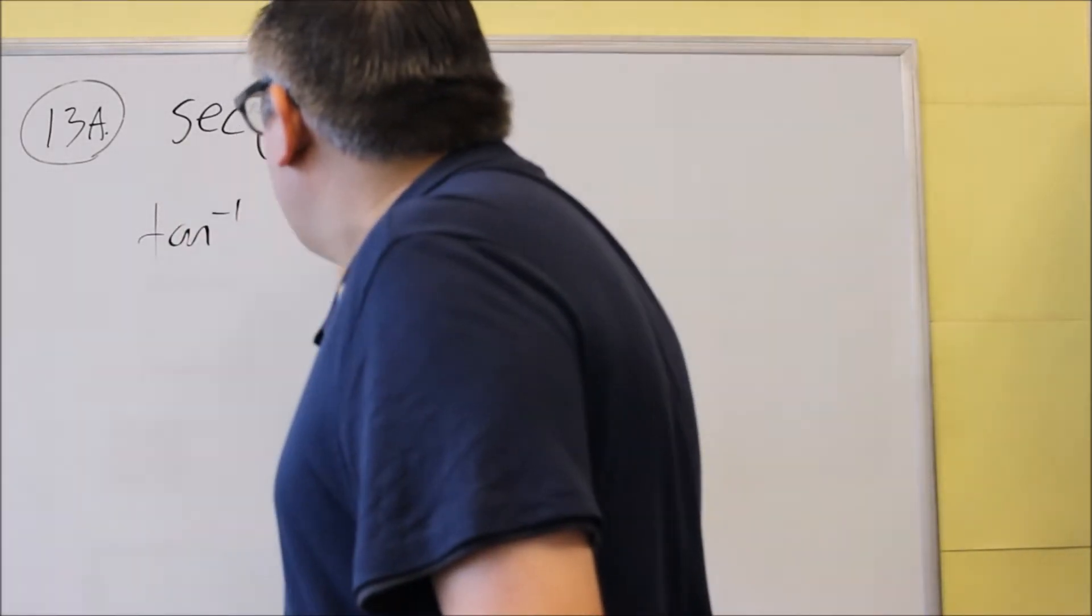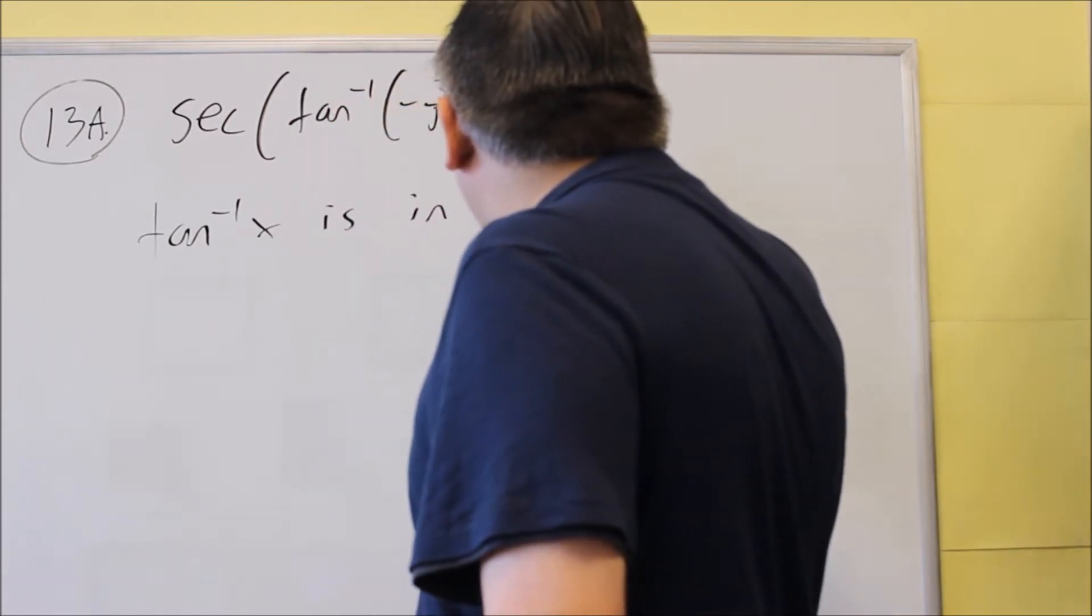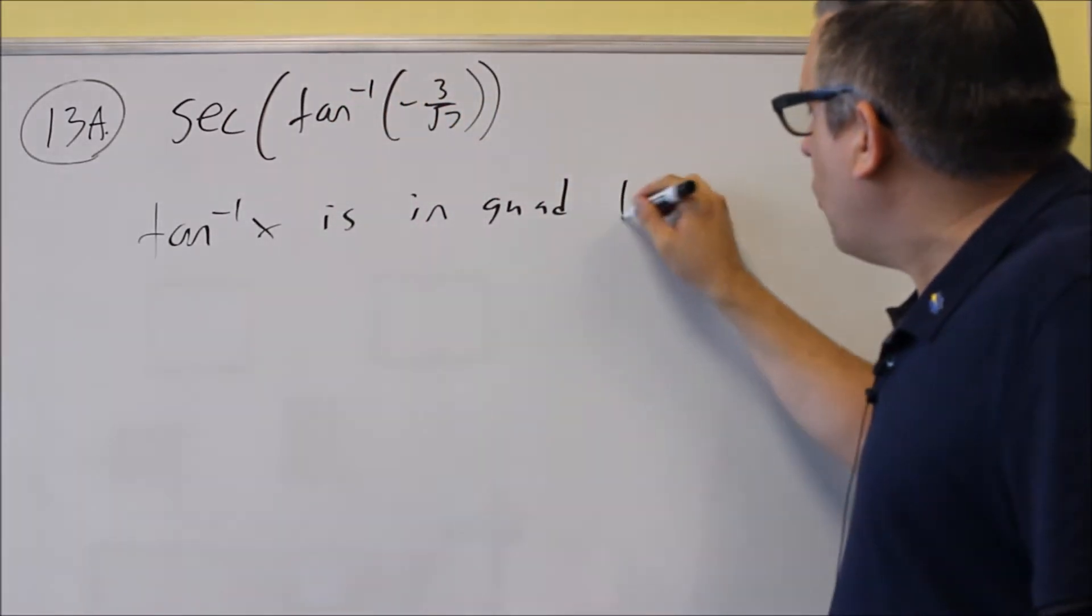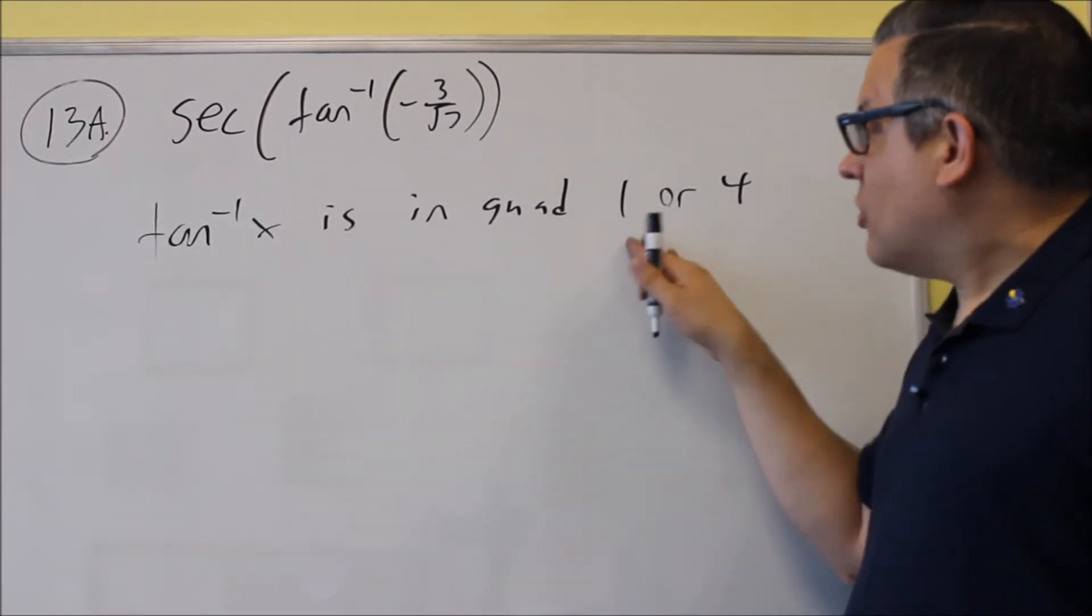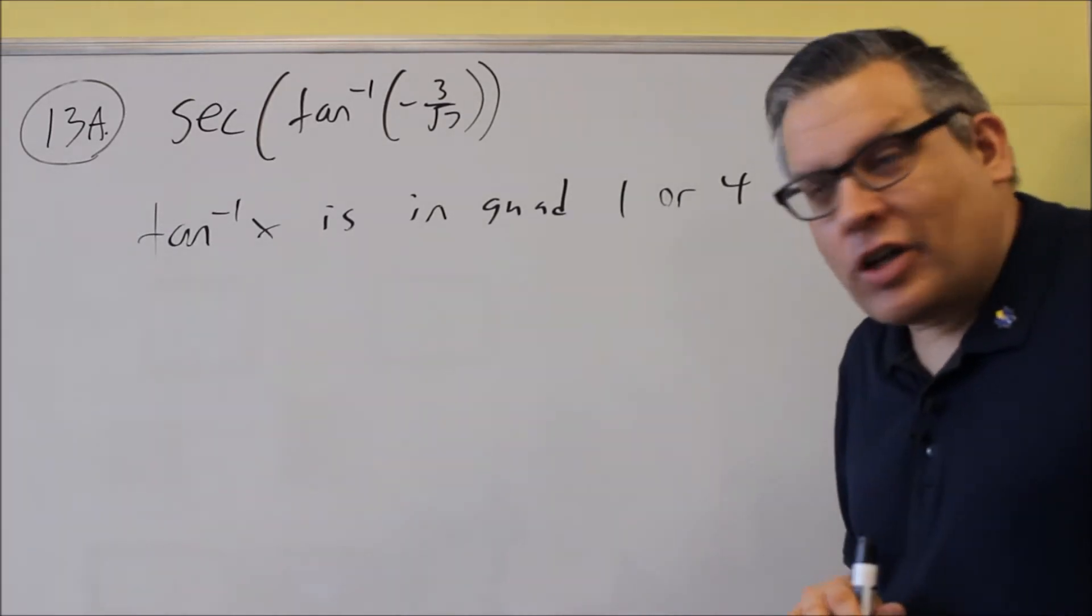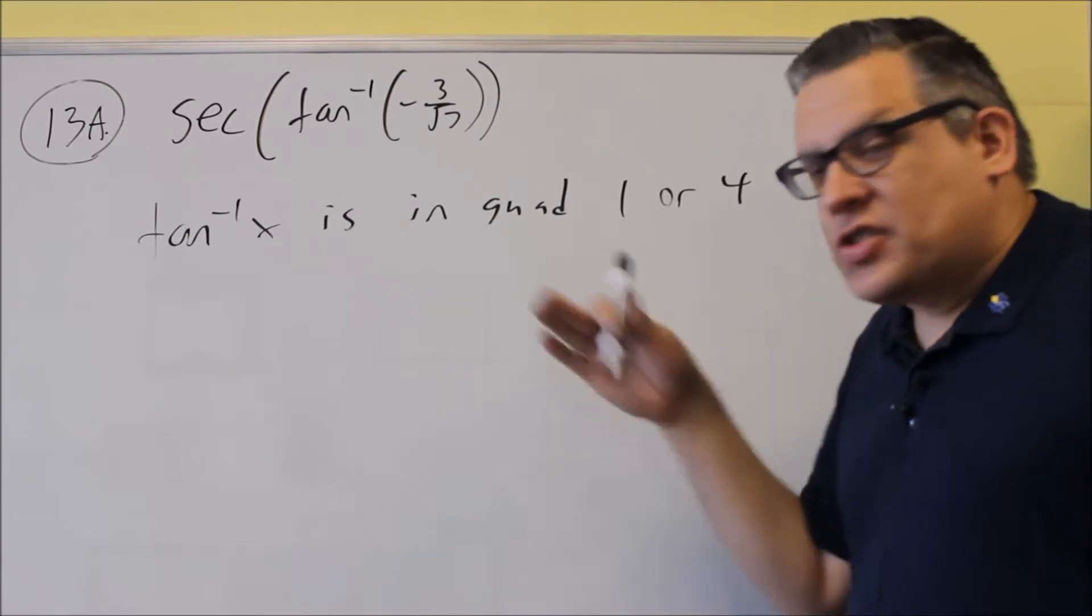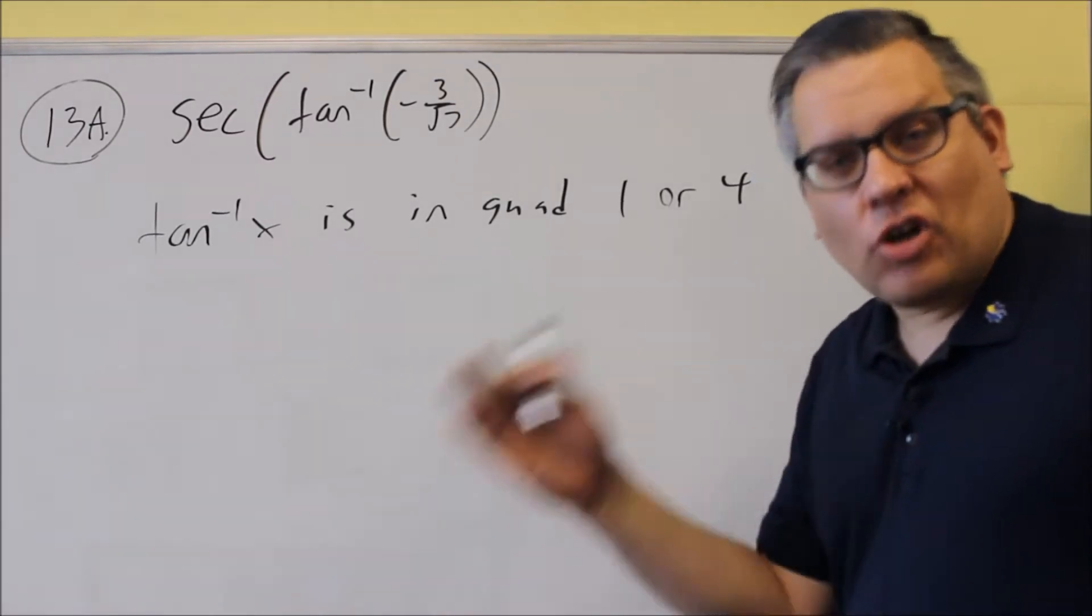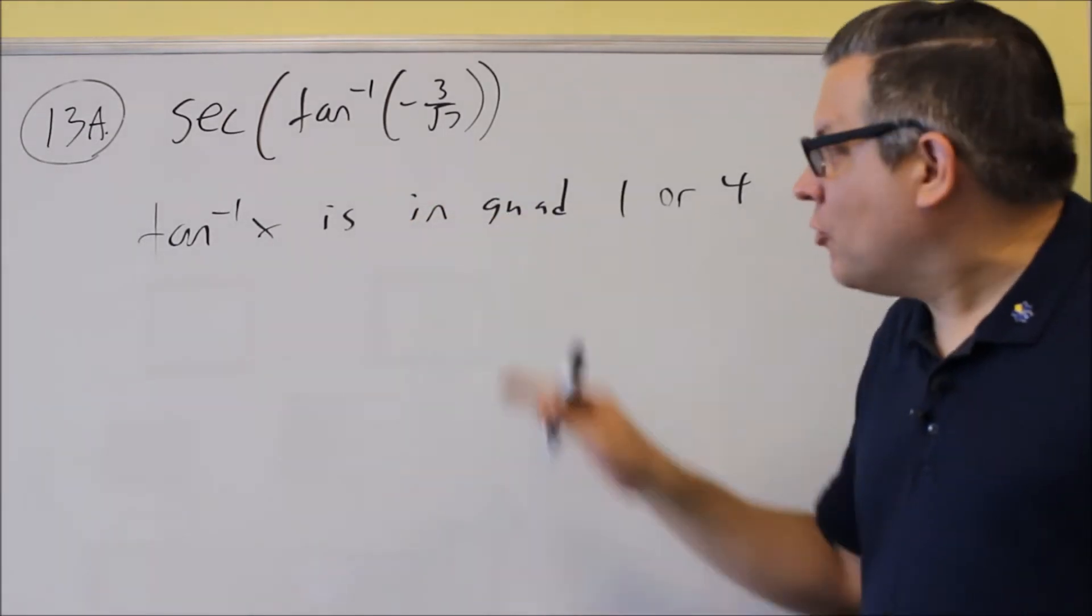So we have to talk about what quadrants inverse tangent is in. So inverse tangent of x is in quadrant 1 or 4. These are the rules that come from the lecture notes. We also have rules for inverse sine and inverse cosine, so you want to know those rules as well. But inverse tangent is what we have in this particular problem.